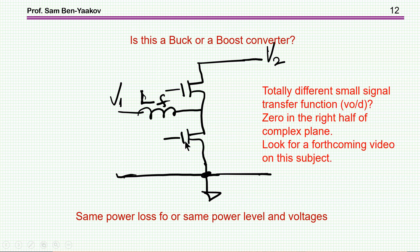And then, however, we know that there is a different small signal transfer function between the buck and the boost. In fact, the boost has a zero in the right half of the complex plane, while the buck doesn't have it. As it turns out, there is really more to it. So this is not discussed in this video. Look for the forthcoming video where I'll discuss this small signal subject, the difference between buck and boost.